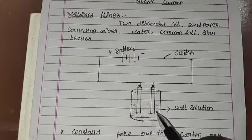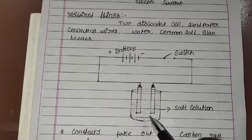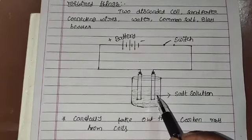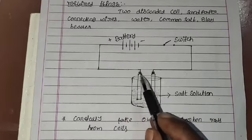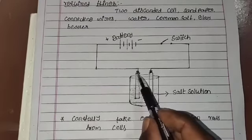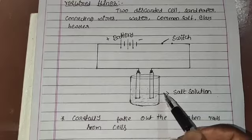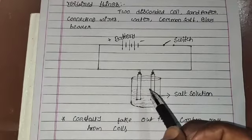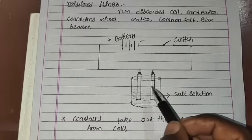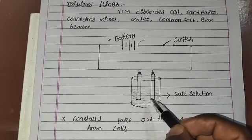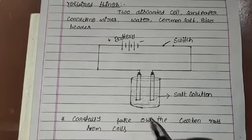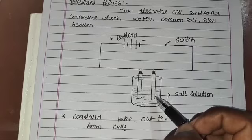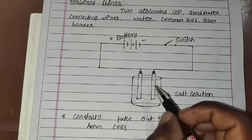We know how to make a salt solution. The metal caps of the carbon rods remain outside of the salt solution. When an electric current passes through this salt solution, after a few minutes we will see gas bubbles near the electrodes. These two are the electrodes.